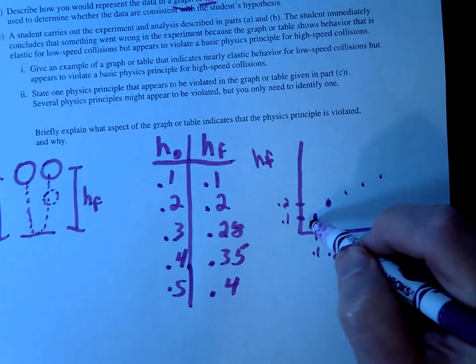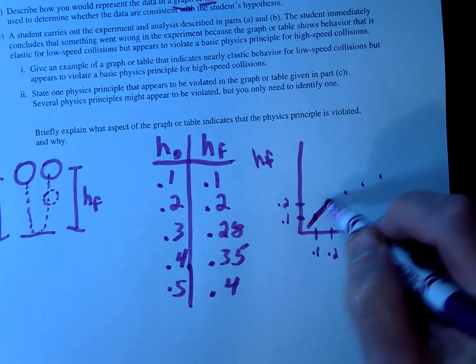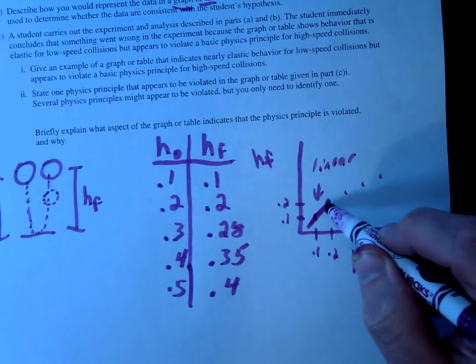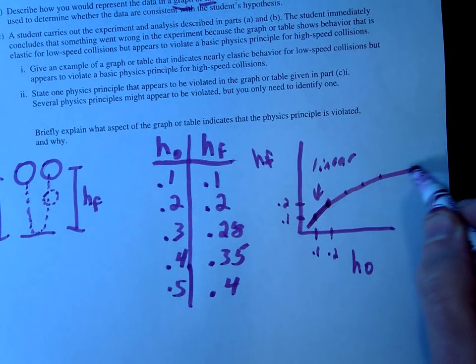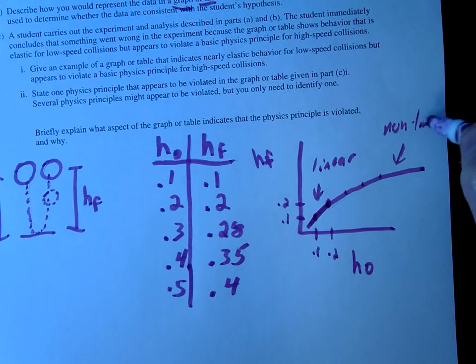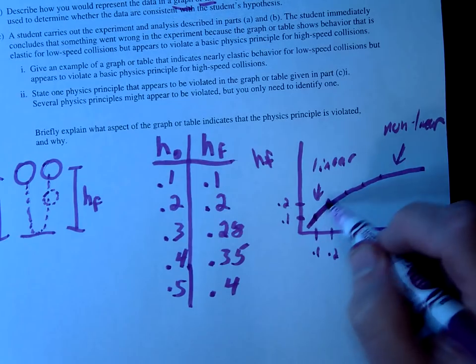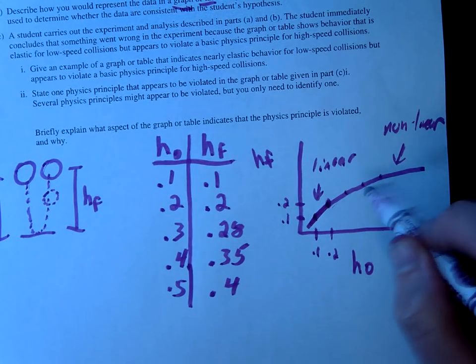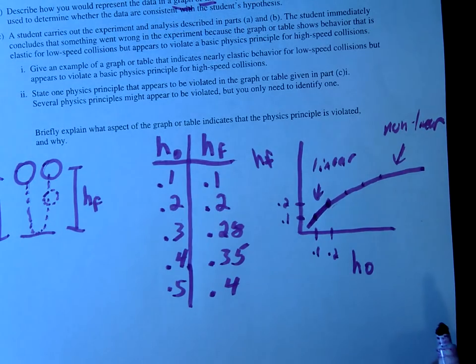So in other words, for this region, it's nice and linear, and then it starts to deviate, and you get kind of a non-linear graph. So this would be perfectly elastic, this would be non-perfectly elastic in that situation.